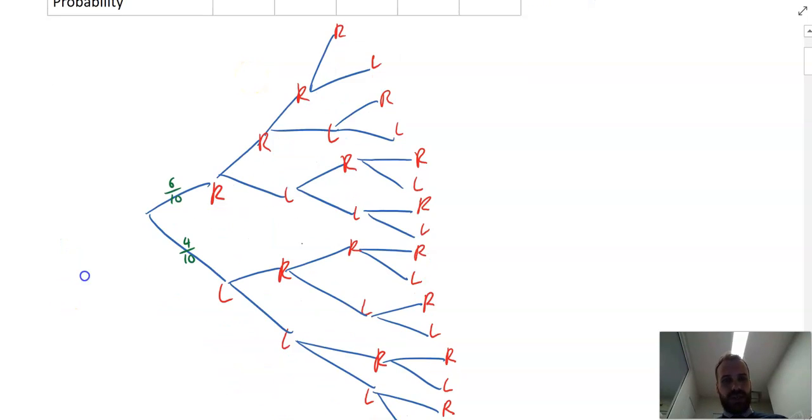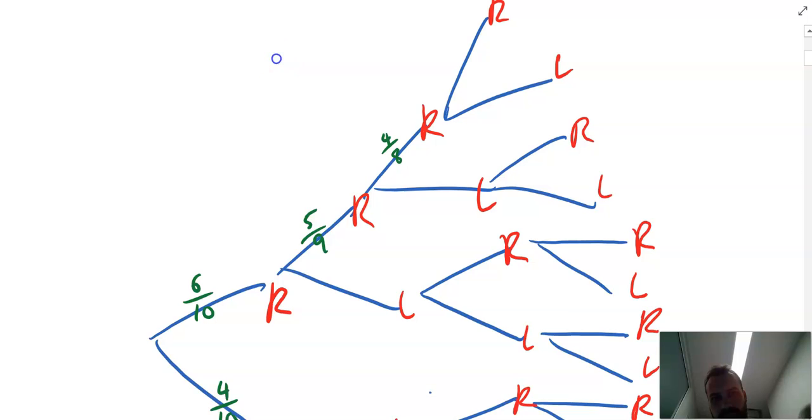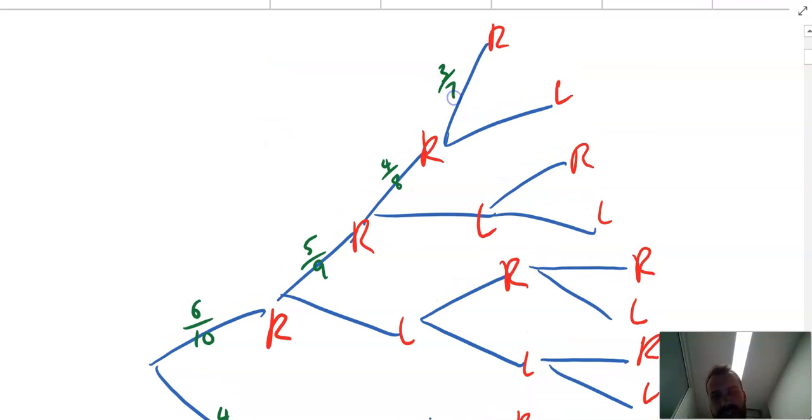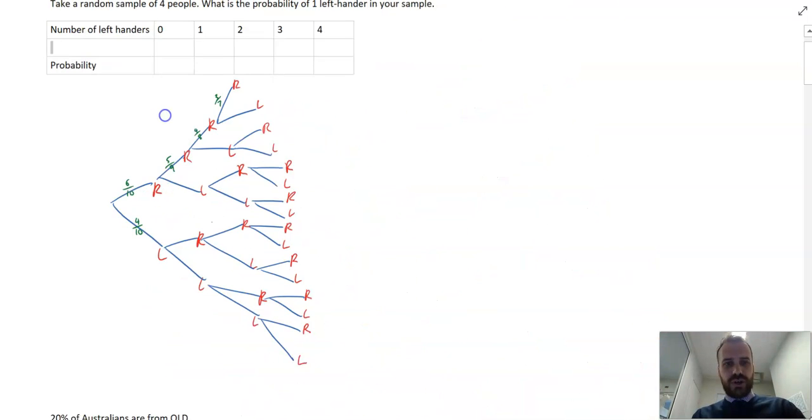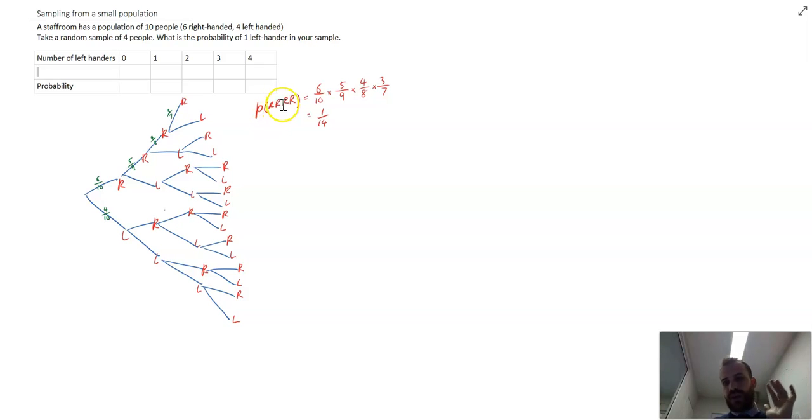It's going to be six out of ten, and then five out of nine, and then four out of eight, and then three out of seven. And of course, I can multiply down that chain to get my probability. Probability of getting right-hander, right-hander, right-hander, right-hander, that's zero left-handers, is this here, which is one over fourteen.